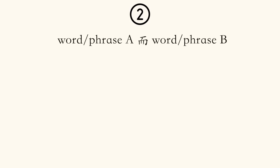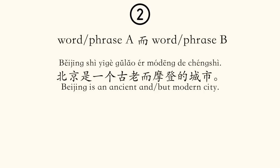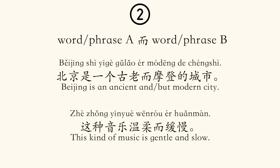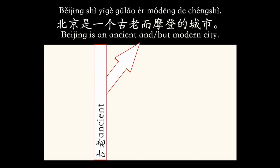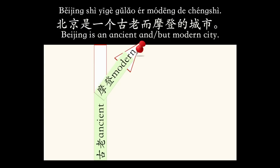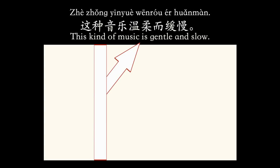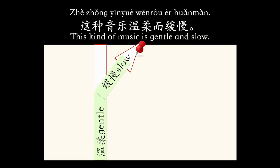Number two: Word/phrase A, 而, Word/phrase B. For example: 北京是一个古老而磨灯的城市。 这种音乐温柔而缓慢。 Here we can translate 而 as 'and' or 'but.' I know it's confusing — that's why understanding it in a Chinese way is much better. Think about the superhighway: 北京是一个古老而磨灯的城市 — you reach your destination or conclusion, and both parts contribute to it. Likewise, what is this kind of music? 温柔, 缓慢 — a combination of these two parts.